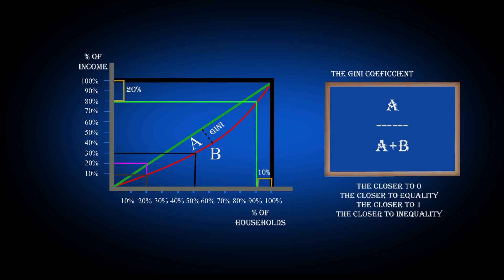The closer the result is to 0, the closer it is to equality, which is represented by the line of equality, and the closer it is to 1, the closer to perfect inequality, which is represented by the 90 degree angle.